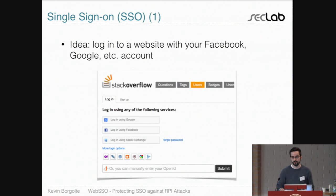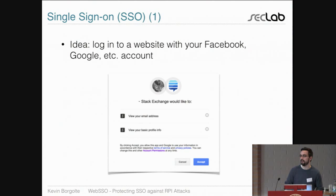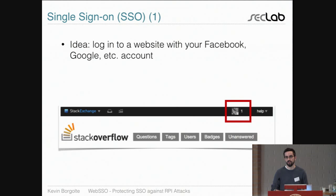If we go ahead and log in with Google, we get the Google prompt for filling out the password and logging in. If it's the first time using Stack Overflow, we see that Stack Exchange wants authorization to access your email address and some basic information, which they use to create an account on their website. If you grant this authorization, you get a Stack Exchange account which you can log in to with your Google account.